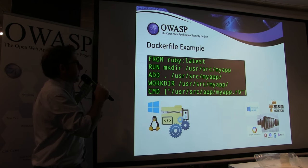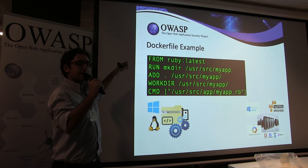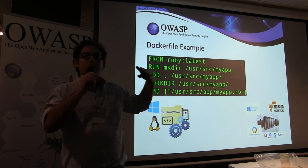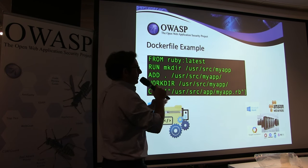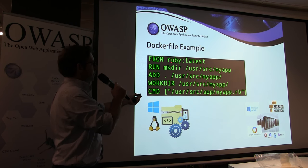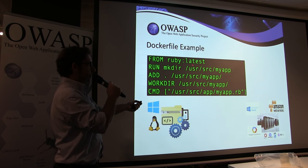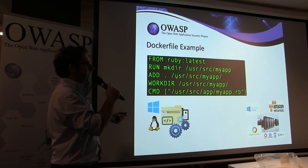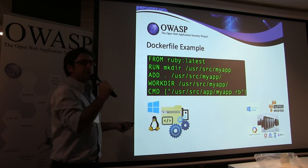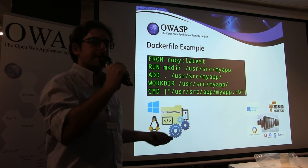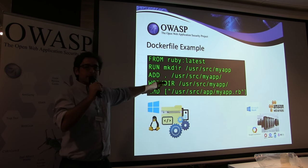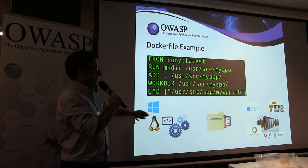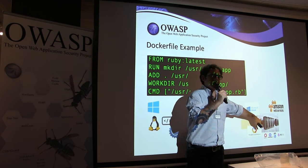The next step is to create a simple Dockerfile, which defines what the image will do once deployed as a container. We specify: use the latest version of Ruby, create a directory at /usr/src/myapp, copy our source code into that directory, and define the default command to run when the container is instantiated. Once the Dockerfile is set up, that image gets pushed to wherever the Docker engine is running.